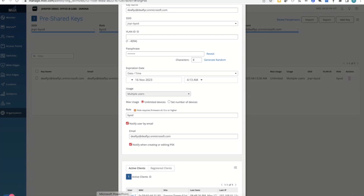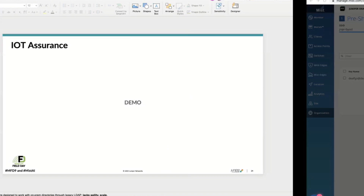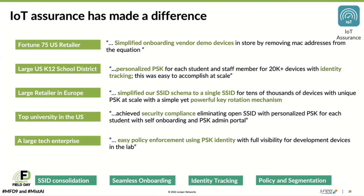That's the BYOD portion. Now let me show what the outcomes were — how we were able to help customers over the last year. We've done a number of use cases. A Fortune 75 retailer used our IoT Assurance to simplify onboarding of demo devices and accessible vendor demo devices in their stores. They removed the requirement of dealing with MAC addresses. Previously they had to register every single MAC address in every store for vendor isolation. Now they've created a key per vendor, devices are automatically onboarded, encrypted, and it's a seamless experience.